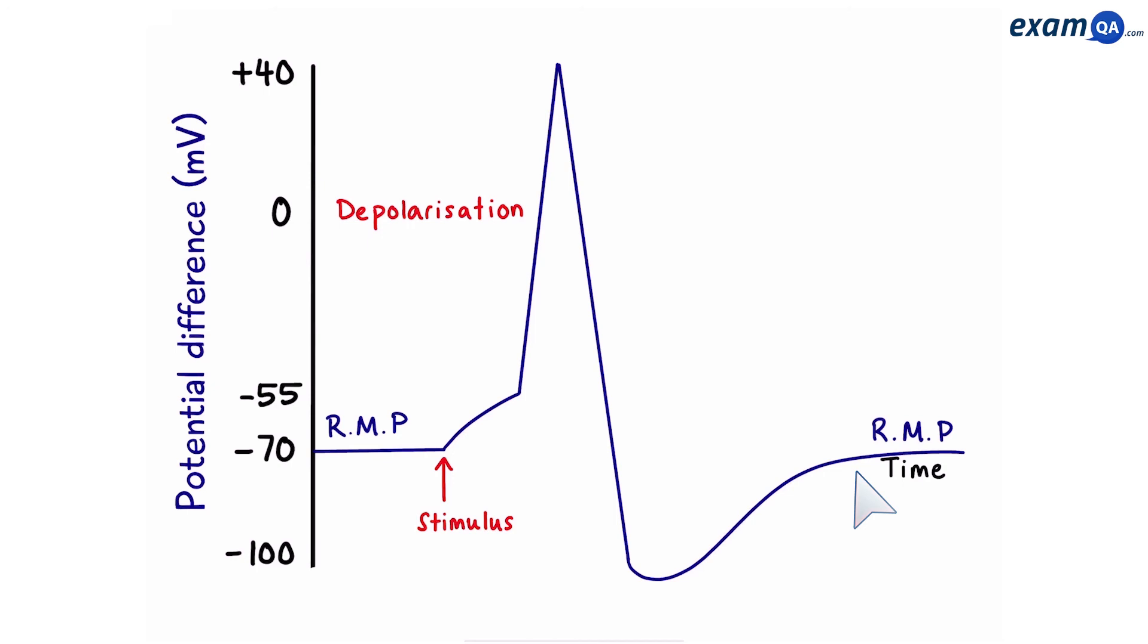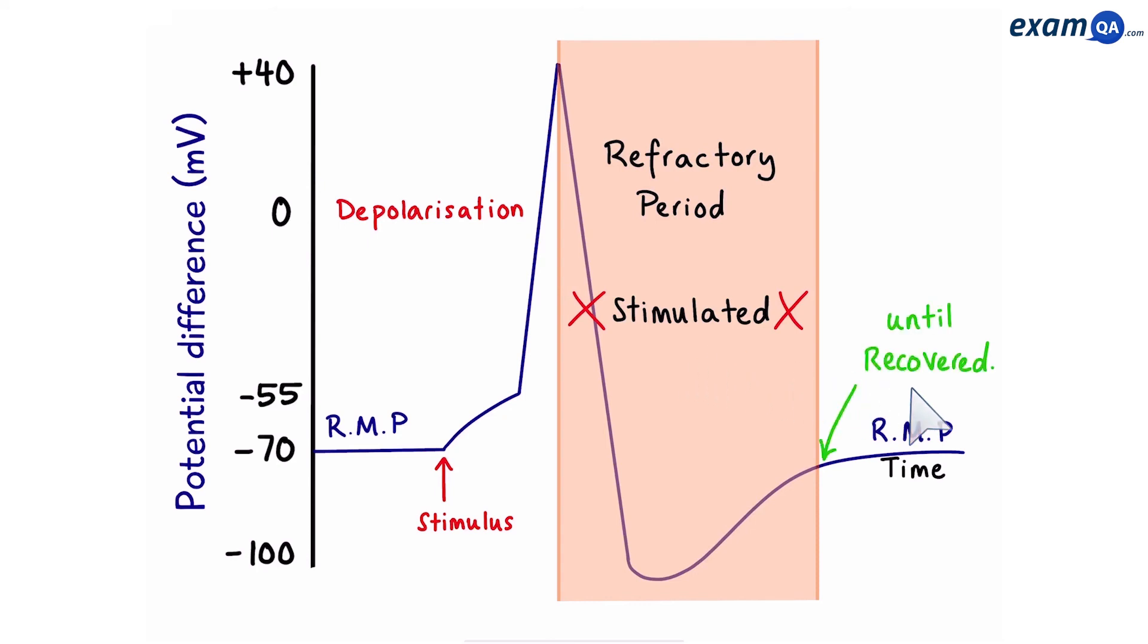Perfect. Now, this part over here, from the peak, all the way back to the resting membrane potential, is called the refractory period. During this time, the neuron cannot be re-stimulated. Which means, the neuron cannot fire another action potential until it has recovered. We'll talk about the significance of the refractory period in another video.